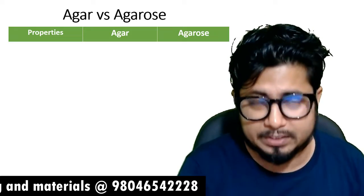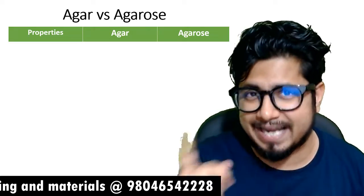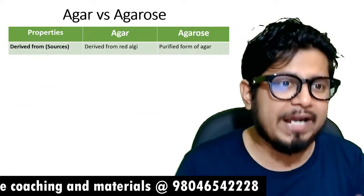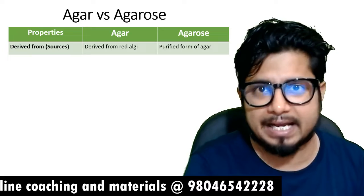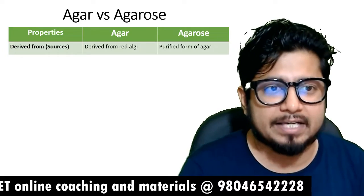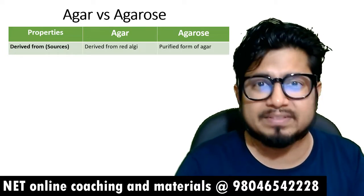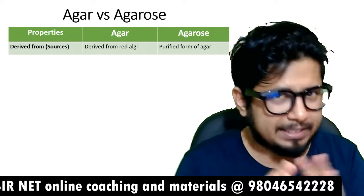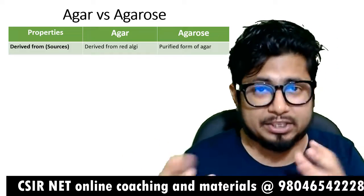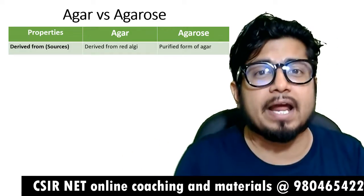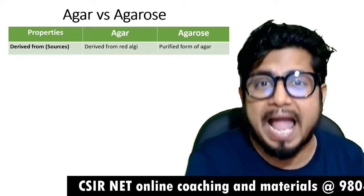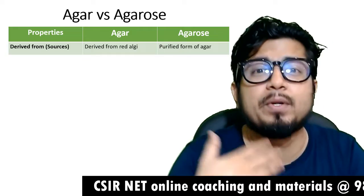The first thing is their source — where do you derive agar and agarose from? Agar is derived from red algae. Agarose, on the other hand, is derived from agar, as it is a purified form of agar.